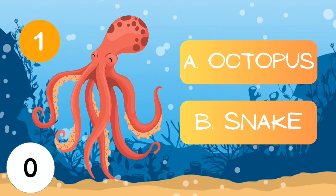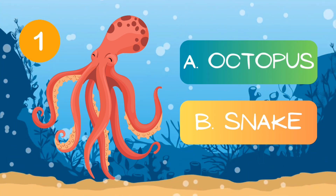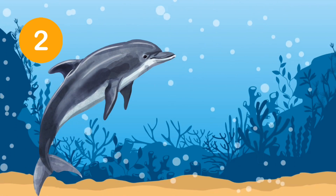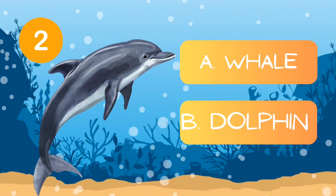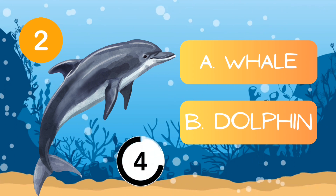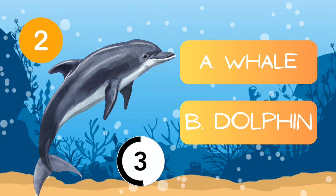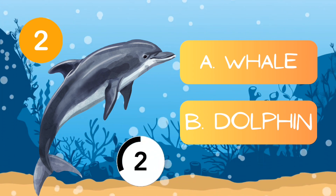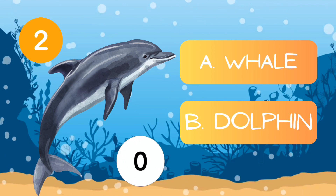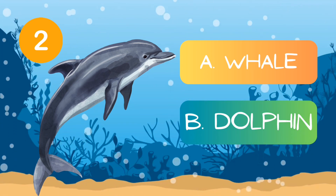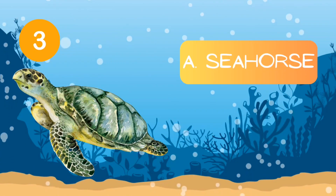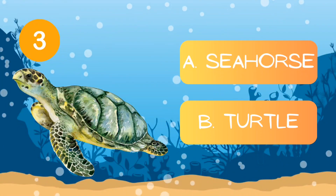Answer: a) octopus. Next: a) whale, b) dolphin. Answer: b) dolphin. Next: a) seahorse, b) turtle.